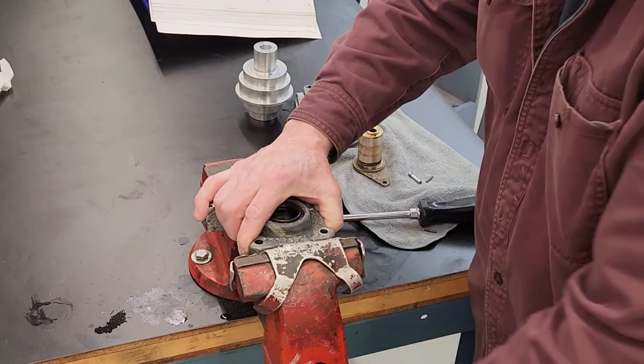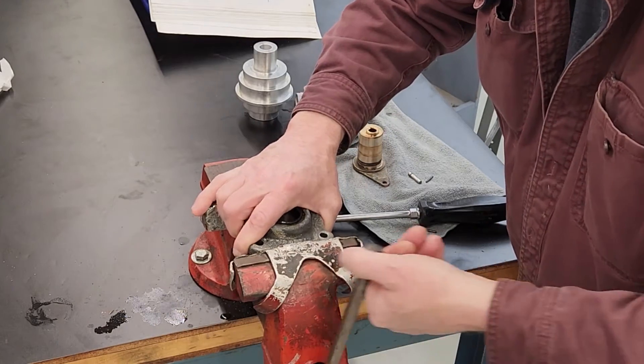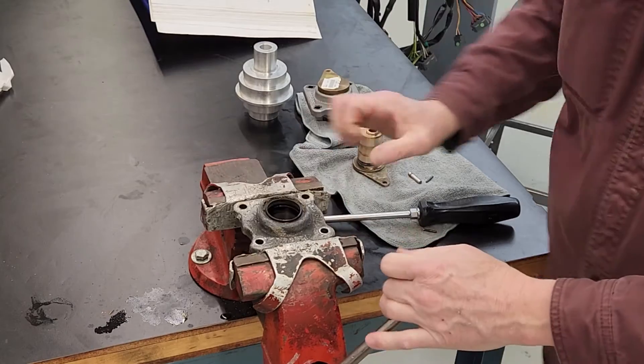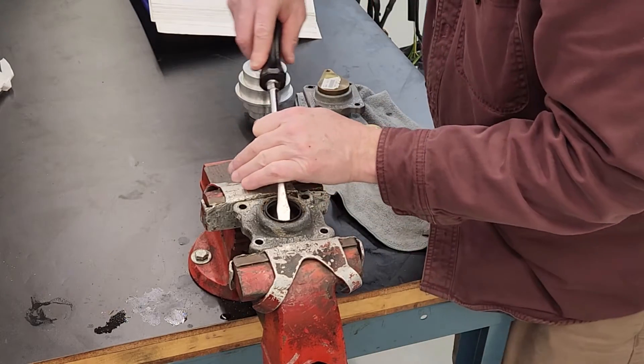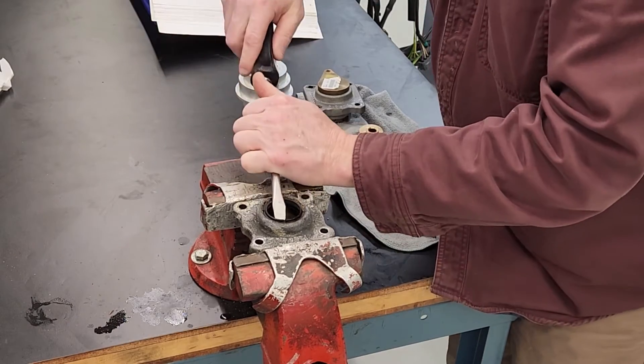We're going to take the shift housing. I've already got the pins out of it, I've got the body out, and I'm going to clamp this in a vise with soft jaws. I'm going to take a screwdriver and a special tool to get underneath the seal and then just pop that seal out. There we go.